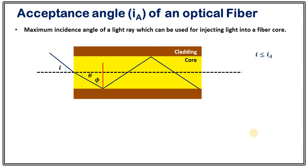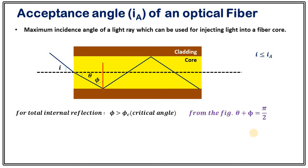This is only possible when the incident angle is less than the acceptance angle. When phi is greater than phi_c, light will be totally internally reflected and will move through the optical core. From this figure, we can see that theta plus phi equals pi by 2, so theta and phi are related by this relation.